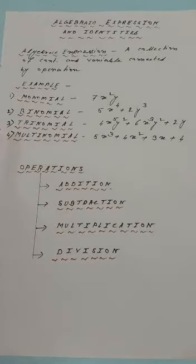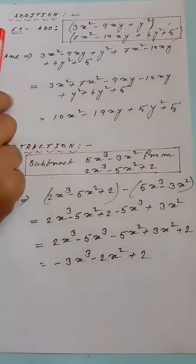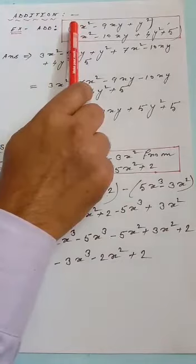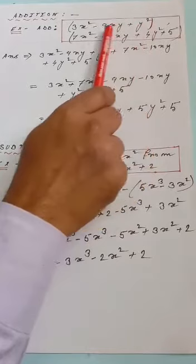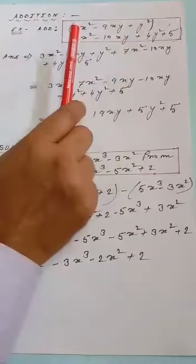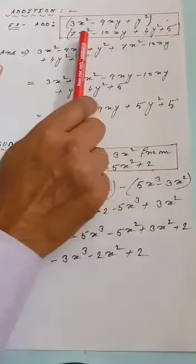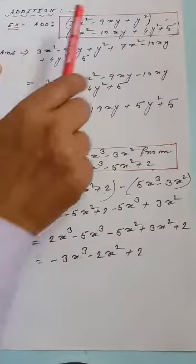Now let's look at basic operations on algebraic expressions: addition, subtraction, multiplication, and division. For addition, consider the first expression 3x² − 9xy + y², which is a Trinomial since there are 3 terms. The second expression is 7x² − 10xy + 4y² + 5, which is a Multinomial since there are 4 terms. Let us add these two expressions.